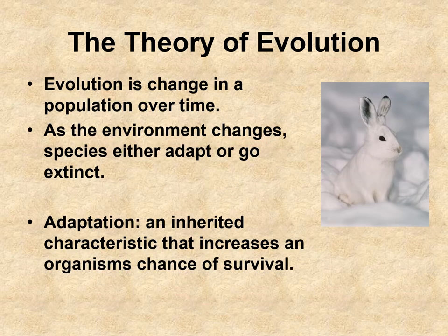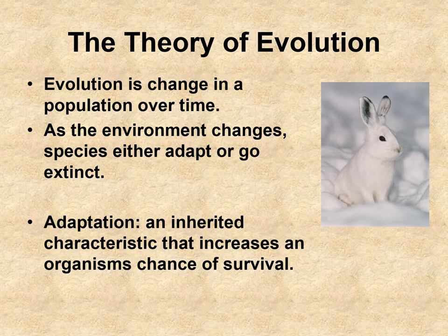Evolution is basically a change in population over time, and most of the time it's due to mutations. For example, this white rabbit doesn't know it's white. It is camouflaged with the snow, which means it hides from predators and doesn't get eaten. So that gene has the chance to get passed from generation to generation. It doesn't ask to change, it doesn't ask to evolve — it's just a mutation that happens. And as the environment changes, the species can either adapt or go extinct.